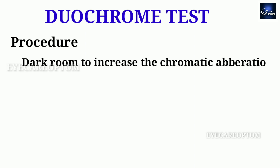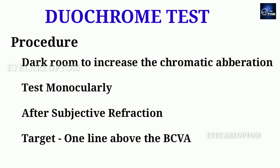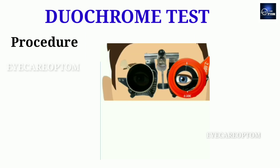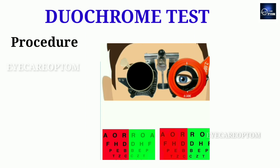The procedure: this test is done in a darkroom to increase the chromatic aberration of the eyes. It is performed monocularly at the end of the subjective refraction. On the Duochrome chart, one line above the best corrected visual acuity will be given as the target, and the patient is asked to report which color background letters are more clearly visible.